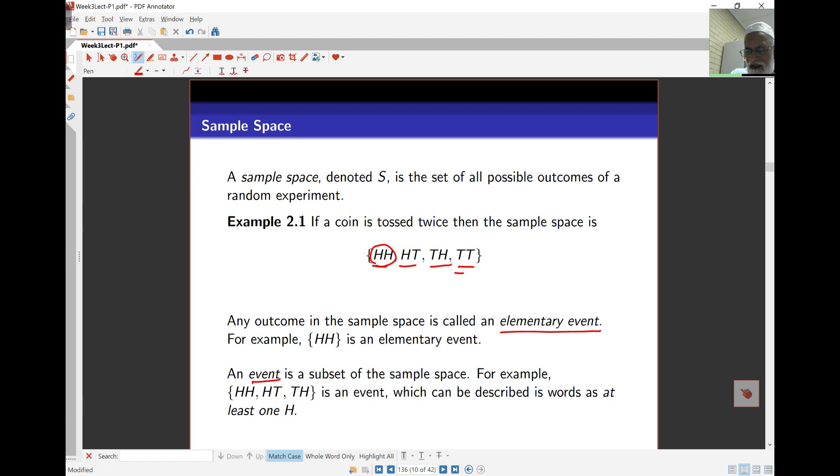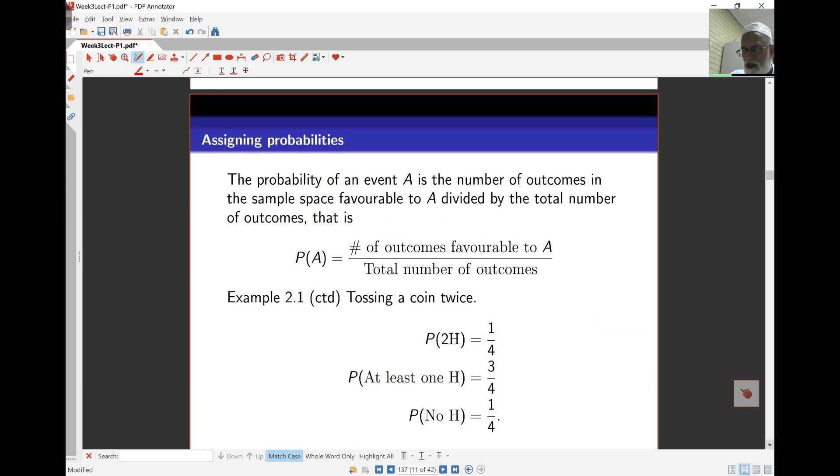The event, any subset, for example this one, is described in words as at least one head. Whereas this elementary event, still an event, is two heads. These particular concepts define how we think in terms of elements of the sample space.